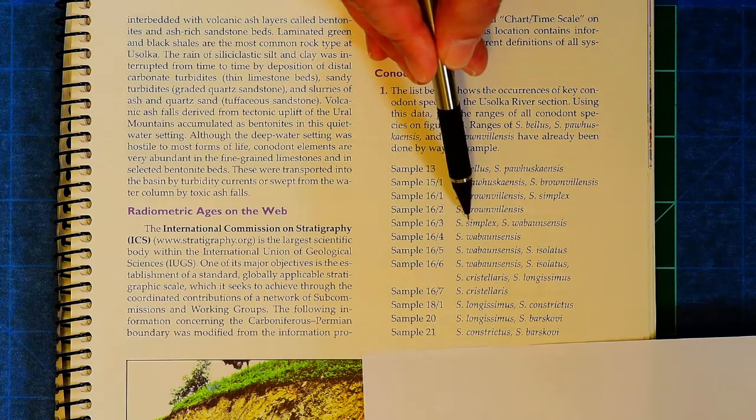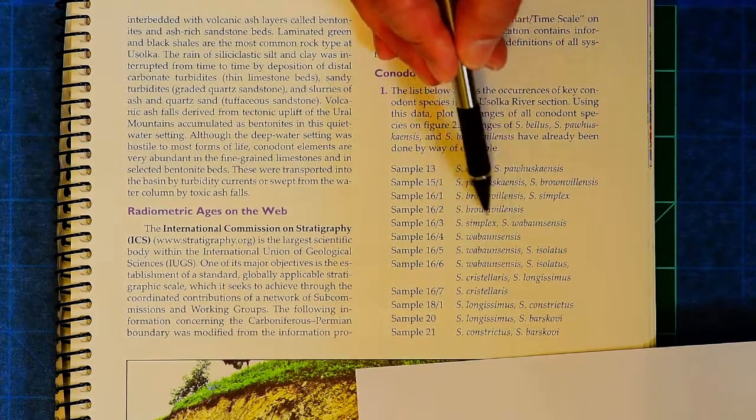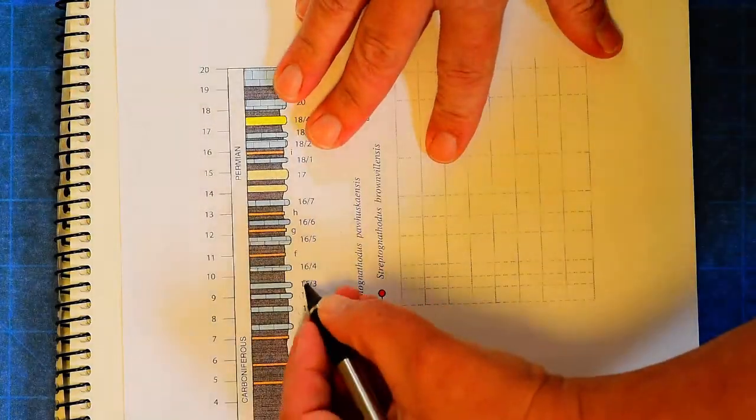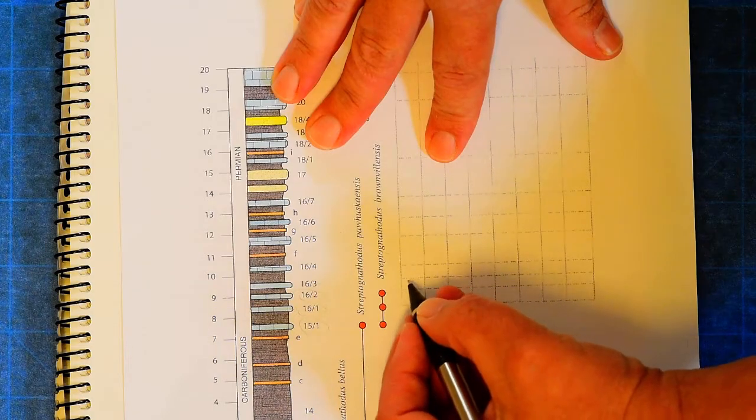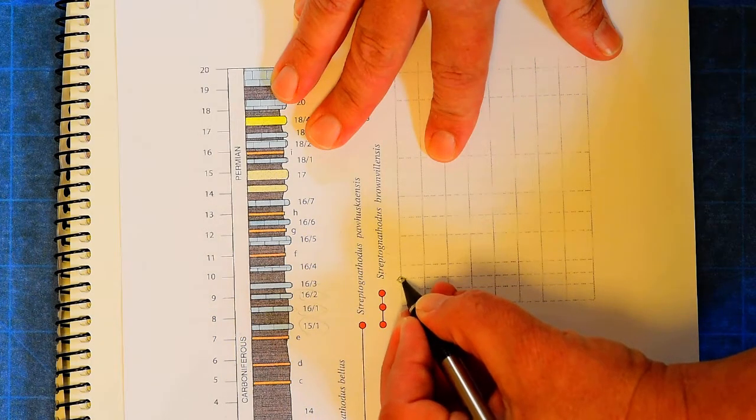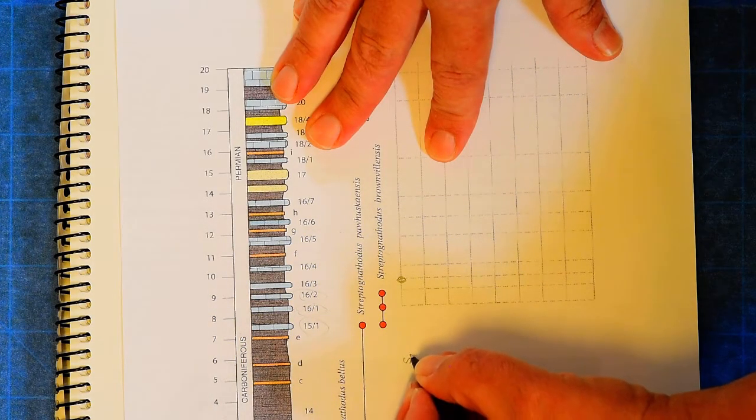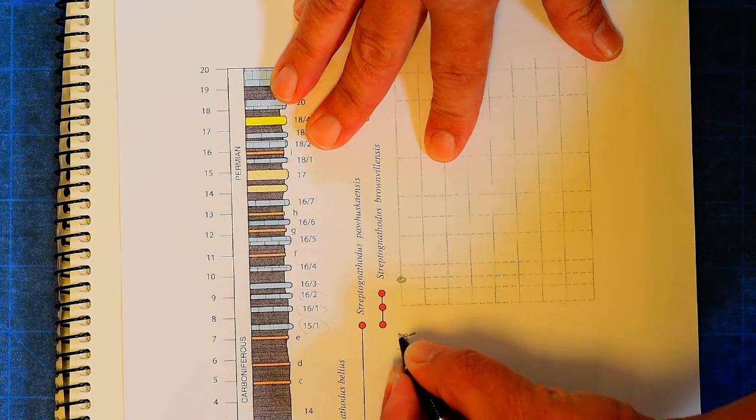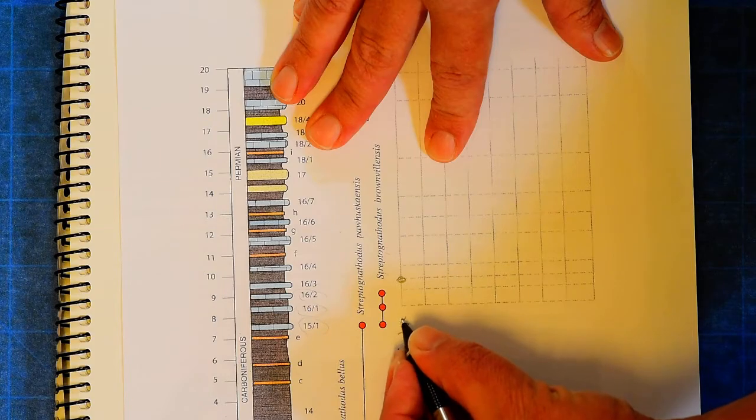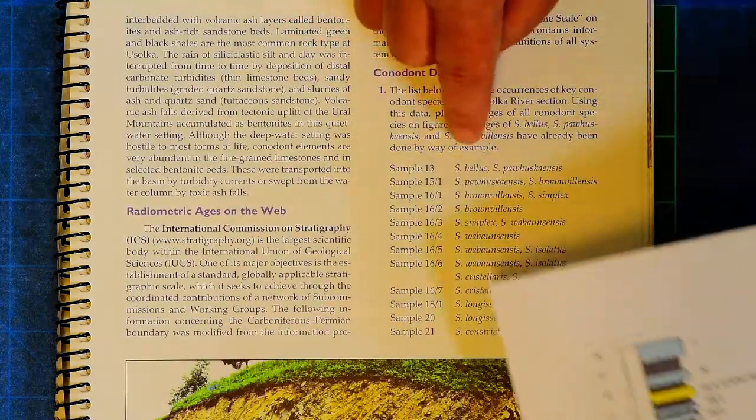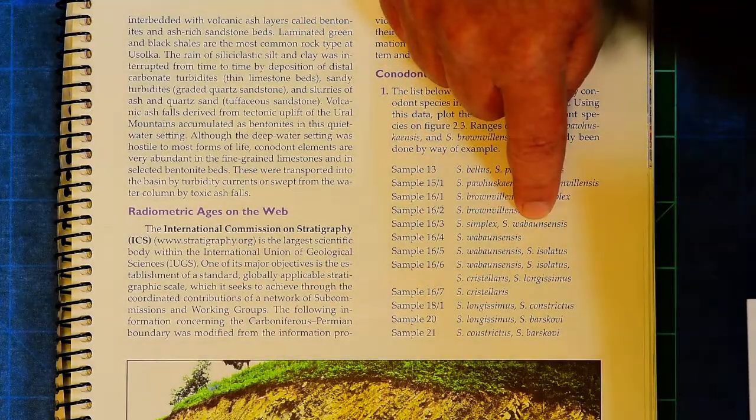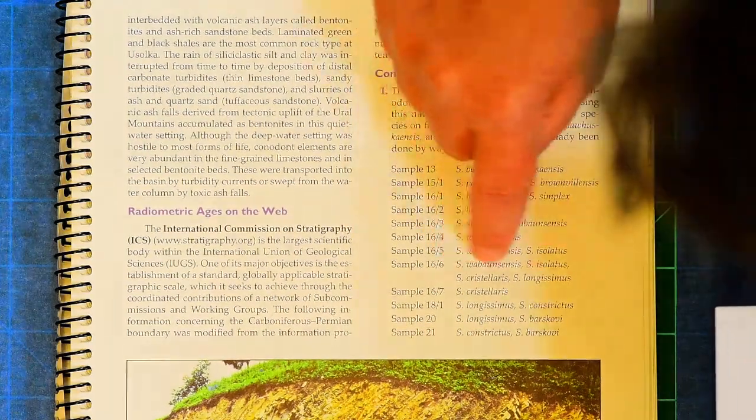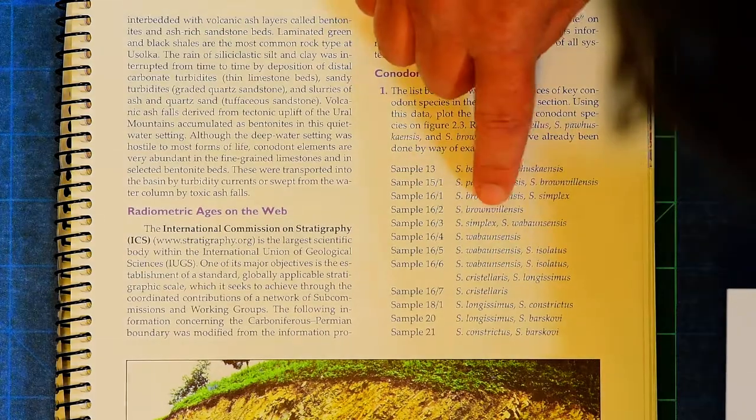Sample 16-3, this conodont S simplex was found. So here's 16-3, I'm going to put a little dot right there, and I'm going to say this is S simplex. Let's see if S simplex shows up anywhere else. No, I don't see it listed anywhere else.